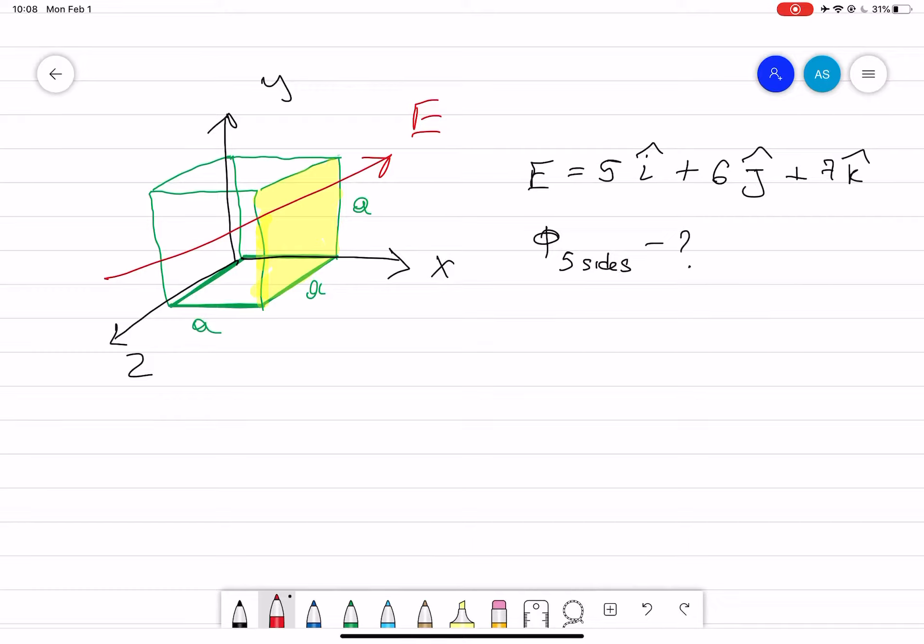We don't know how it's passing, but we know that the total electric flux is equal to zero. So that means if you can find the flux that is passing through the shaded area, then that will be equal to the total flux that is not shaded—the five sides.